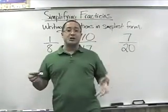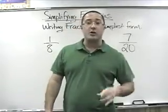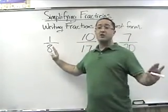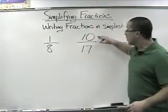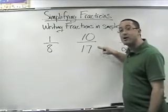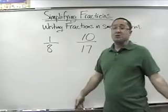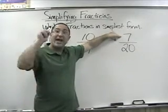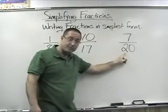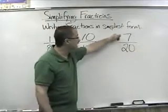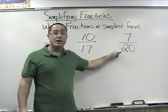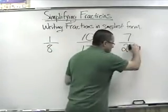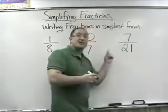How do you know when your fraction is already in simplest form? There are a few things to look for. Number one: if your numerator — your top number — is 1, your fraction is already in simplest form. Number two: if your denominator is a prime number, your fraction is already in simplest form. Number three: if your numerator is a prime number, like 7, and it is not a factor of the bottom number, your fraction is already in simplest form. For example, 7 over 20 is already in simplest form because 7 is prime and 7 is not a factor of 20.